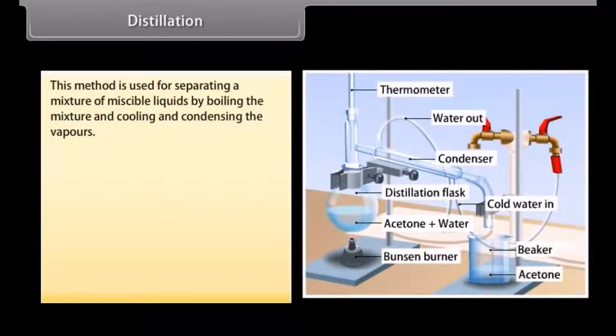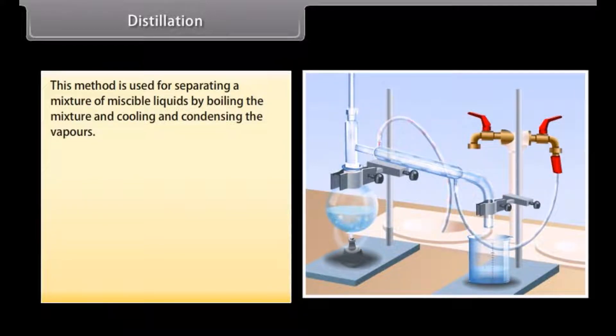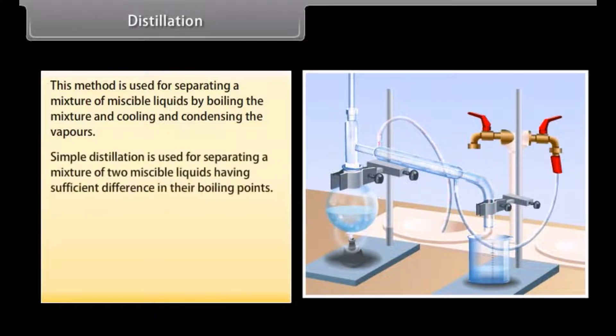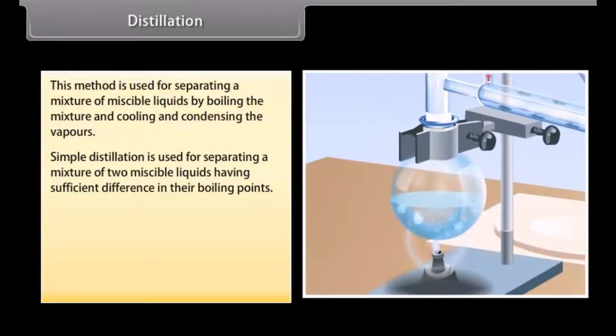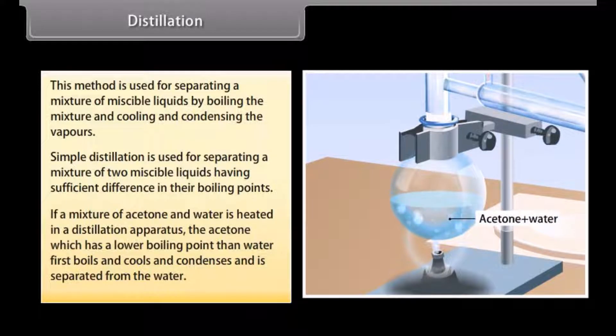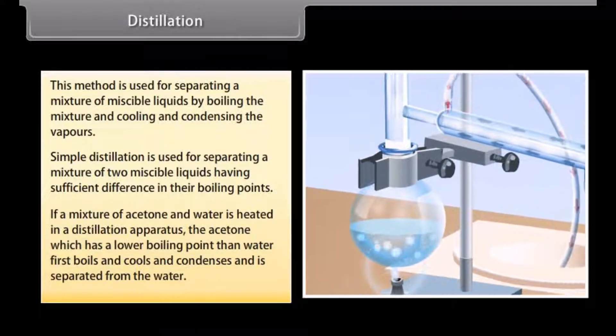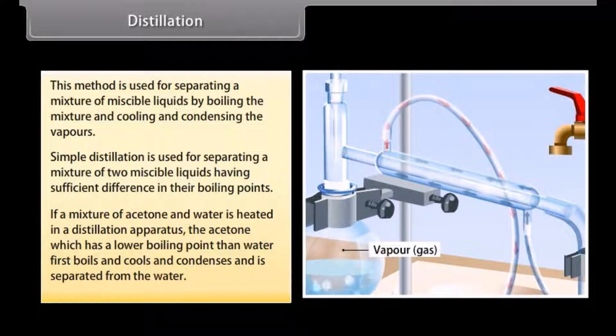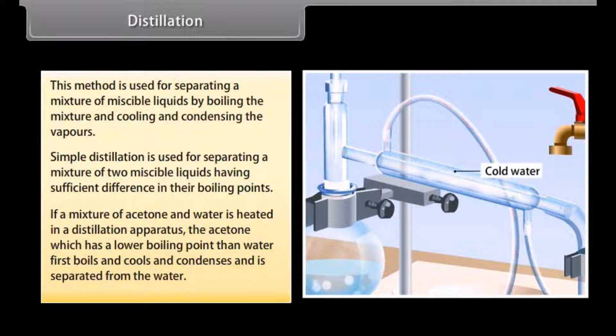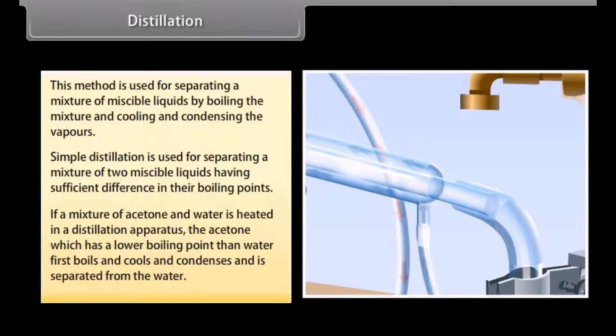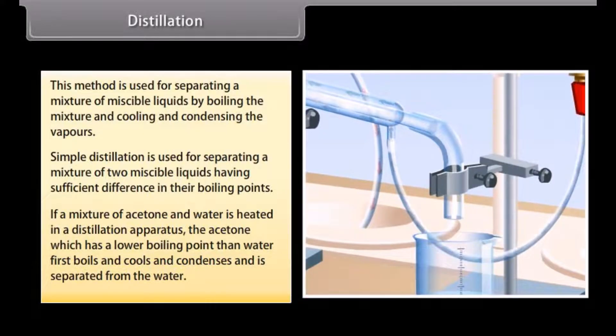Distillation. This method is used for separating a mixture of miscible liquids by boiling the mixture and cooling and condensing the vapors. If a mixture of acetone and water is heated in a distillation apparatus, the acetone, which has a lower boiling point than water, first boils and cools and condenses and is separated from the water.